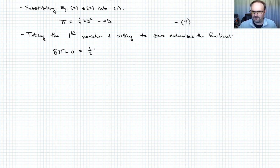Well, that's going to be one-half k. And then this variation here will look like 2d delta d. And then this other would look like p times delta d. And our two cancels with our one-half there. And we're left with the quantity kd minus p times delta d is equal to zero. Let's call that equation five.